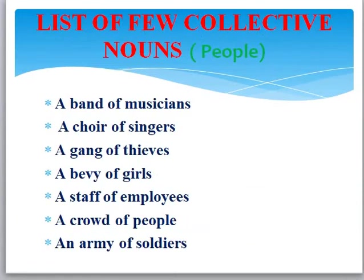Now let's go over a few other examples of collective nouns. First, a few which are related to people. A band of musicians. A choir of singers. A gang of thieves. A bevy of girls. A staff of employees. A crowd of people. An army of soldiers. Now remember, in 'a band of musicians', only band is the collective noun — the entire phrase is not a collective noun. For example: 'The band played wonderfully well at the concert yesterday.' As soon as somebody says this you would understand that a band was playing, meaning there were a lot of musicians sitting together and playing wonderful music.